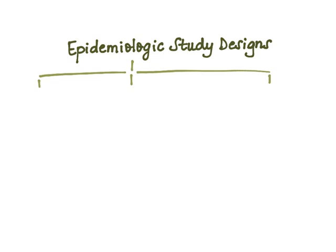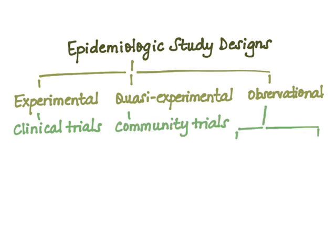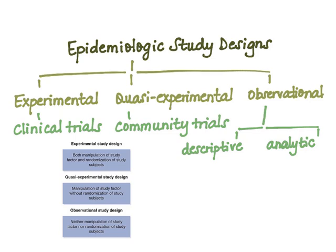We all know disease occurs in patterns within populations, and this reflects the operation of underlying factors. Epidemiologic studies aid in identifying such patterns and can be broadly categorized into three: experimental studies, quasi-experimental studies, and observational studies. Observational studies can be further subcategorized into descriptive versus analytic studies, where descriptive studies characterize the amount and distribution of disease, whereas analytic studies explore the determinants and causes of disease.